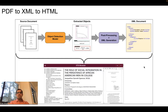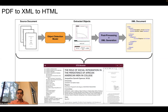By converting the PDF to XML and then to HTML, we create a more user-friendly view of the document, which is especially beneficial for users with certain disabilities such as blindness, since HTML is more compatible with accessibility tools such as screen readers.